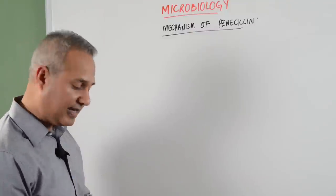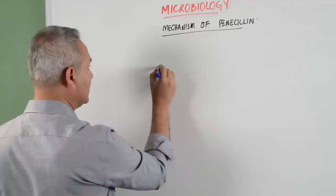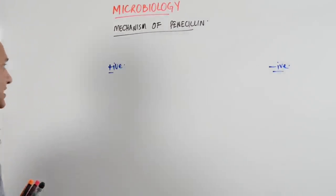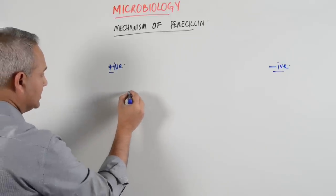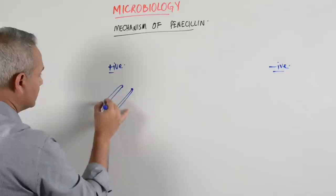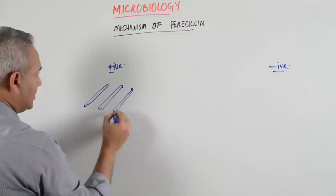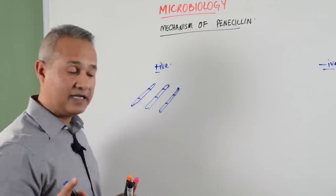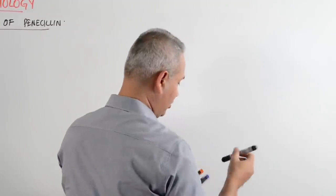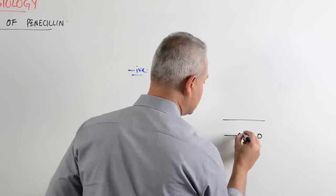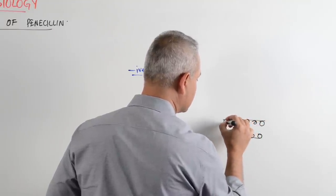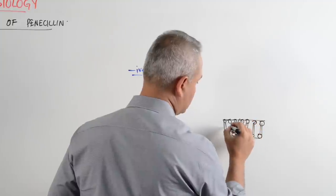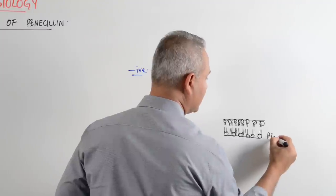Let us talk about gram positive and gram negative. I am going to draw the gram positive cell wall here and the gram negative cell wall here, then we will put penicillin on it and see what happens to these bacteria. Now, the peptidoglycan layer - here is the plasma membrane lipid bilayer, which is the innermost membrane.